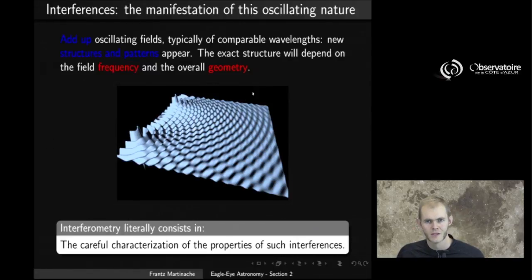And the exact structure of these rings and the features that you see at the surface of the water are going to depend on the global frequency of the excitation by the two sources and the distance that separates the two sources. So the two parameters that are going to matter are the frequency of the field and the overall geometry of the perturbation. And these fields, the added field, the result, is what we call interferences. And interferometry is literally going to consist in the careful characterization of the properties of such interferences.